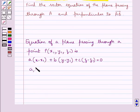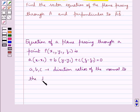where we have A, B, C are the direction ratios of the normal to the plane. This is the key idea for this question.